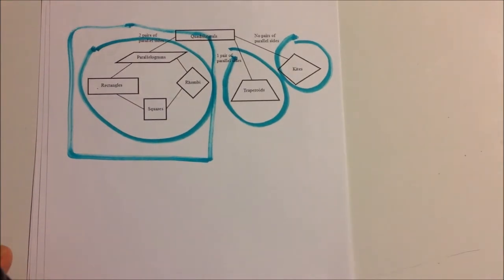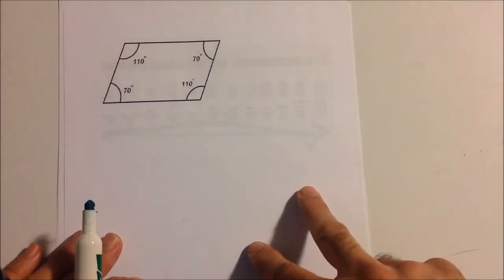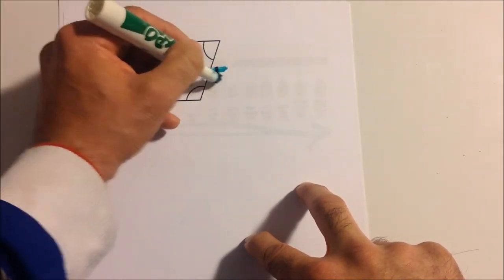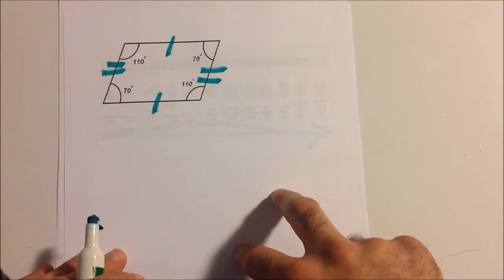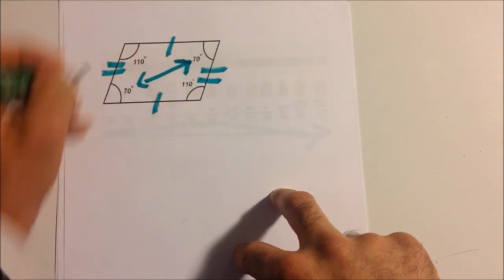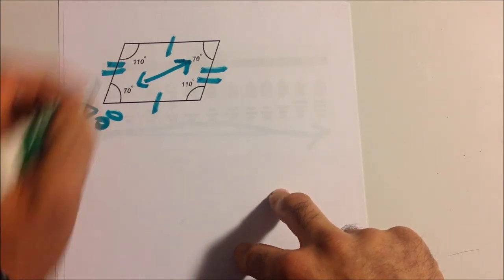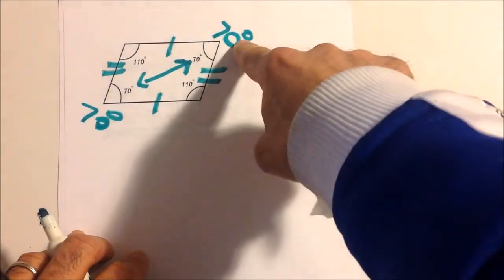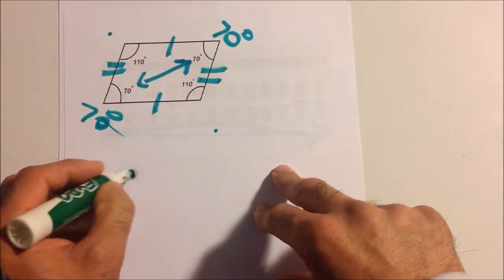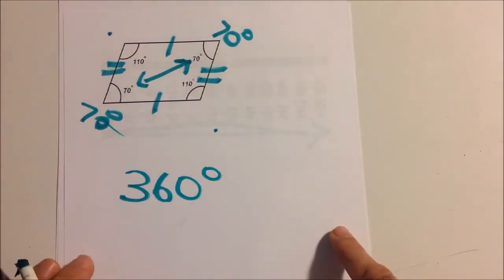Here is a parallelogram. It has two pairs of parallel sides, and the angles opposite each other are congruent — congruent means equal. So here we have 70 degrees, opposite is also 70 degrees, and we have 110 degrees and 110 degrees, all together equaling 360 degrees. The parallelogram is at the top of our hierarchy.